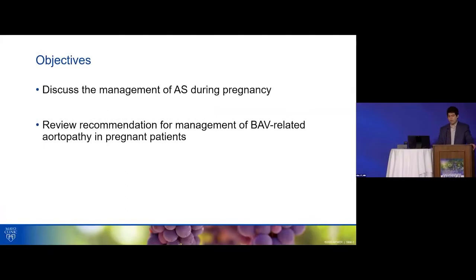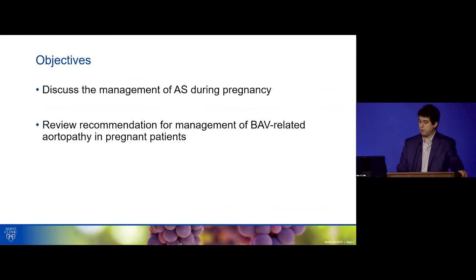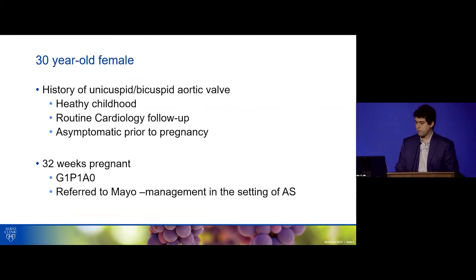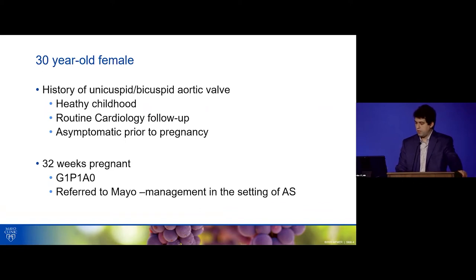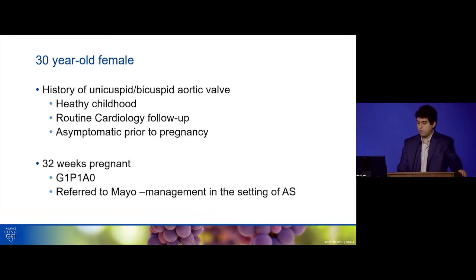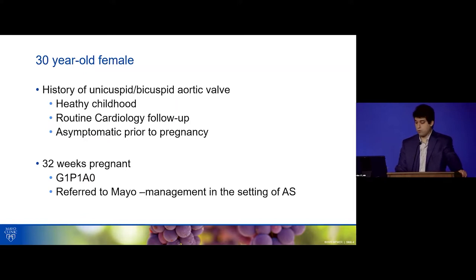We're going to talk about the management of aortic stenosis during pregnancy, and review the recommendations for management of BAV aortopathy in patients that are already pregnant. This is a patient of Dr. Connelly's, and we managed her as a group recently. She had a history of unicuspid versus bicuspid aortic valve, a healthy childhood, routine follow-up without any problems, and was completely asymptomatic prior to pregnancy. She presented to us at 32 weeks gestation for management of her AS during pregnancy.